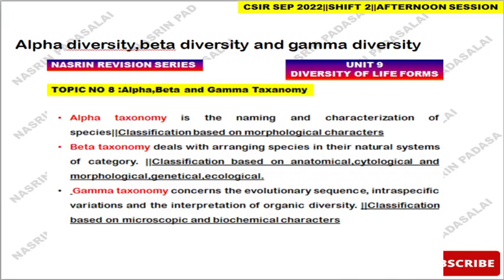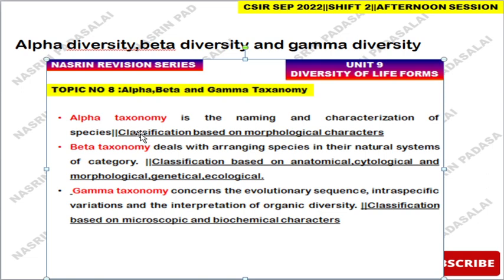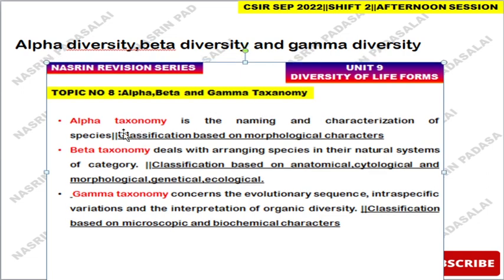Next: a question on alpha, beta, and gamma taxonomy/diversity. Alpha taxonomy involves naming and characterization of species — classification based on morphological characteristics. Beta taxonomy deals with arranging species in natural systems — classification based on anatomical, cytological, morphological, genetical, and ecological data. Gamma taxonomy concerns evolutionary sequences, intraspecific variation, and interpretation of organic diversity — classification based on microscopic and biochemical characteristics.